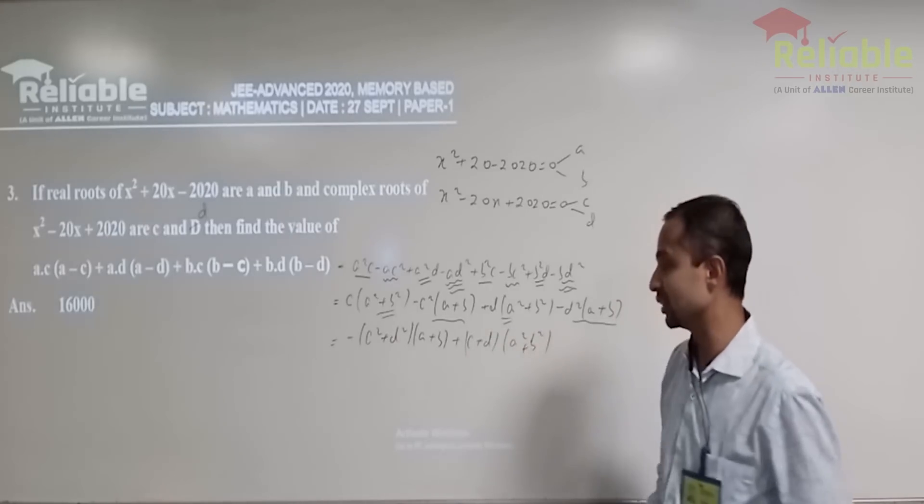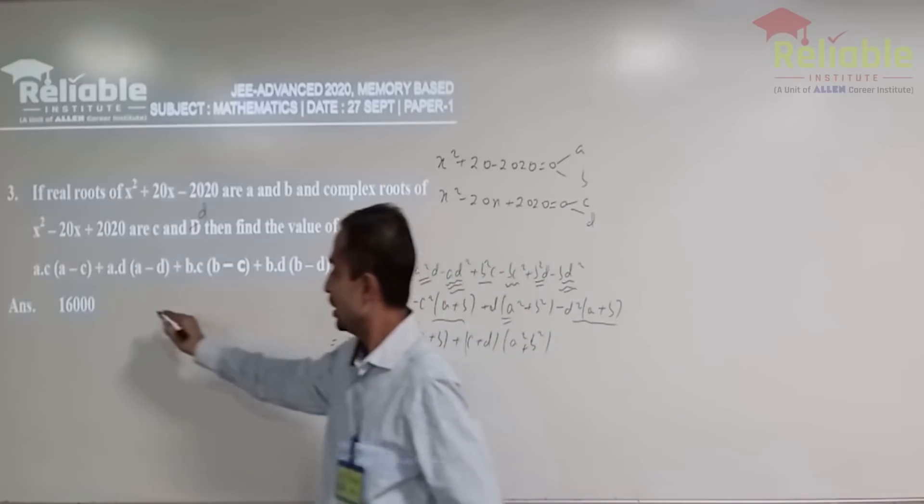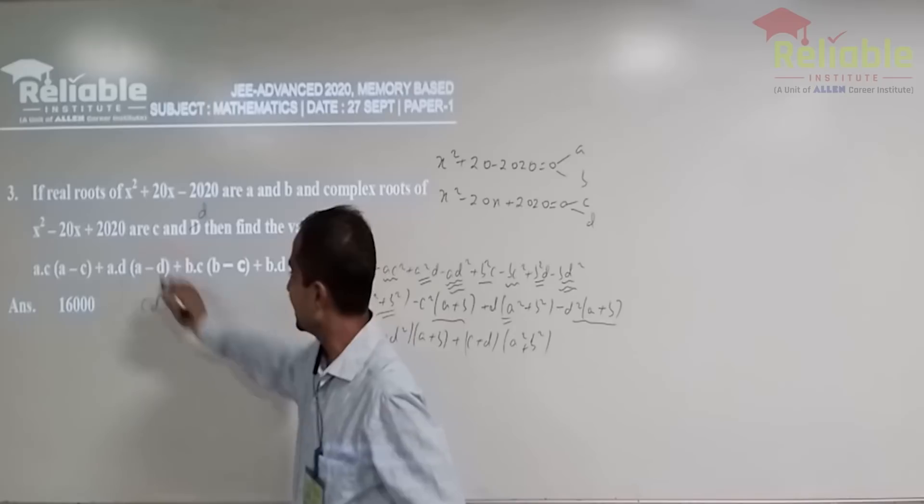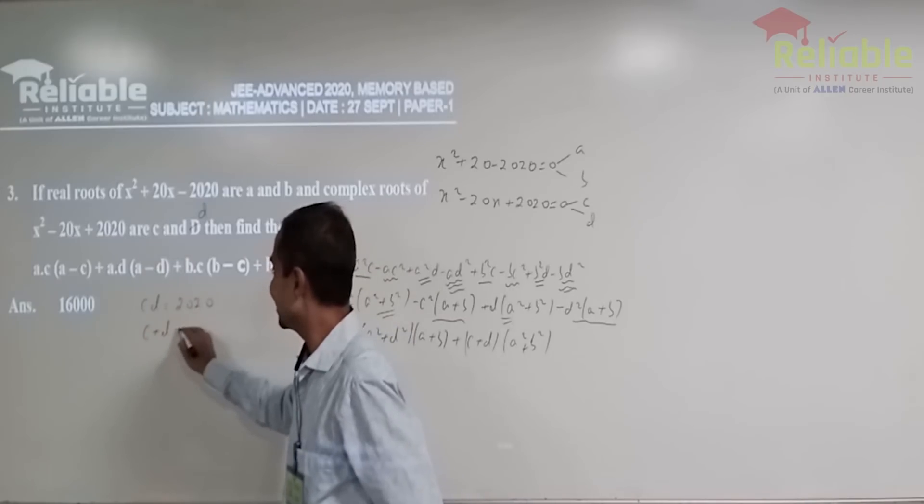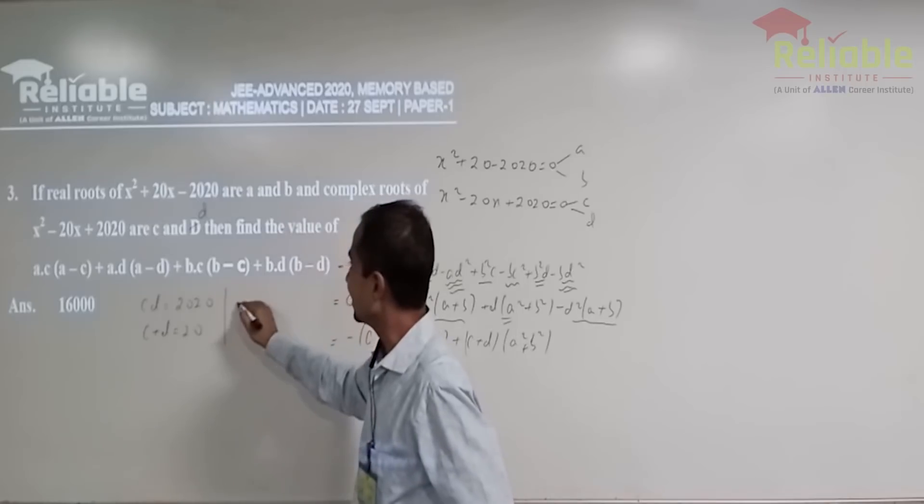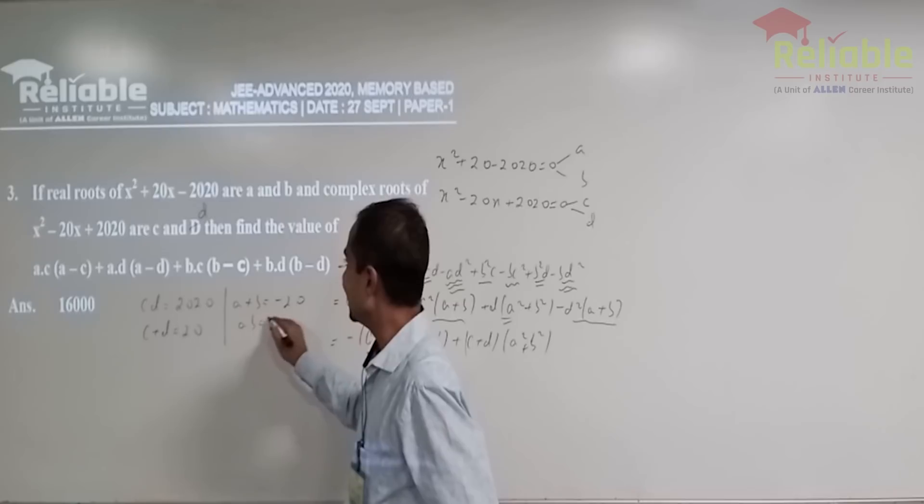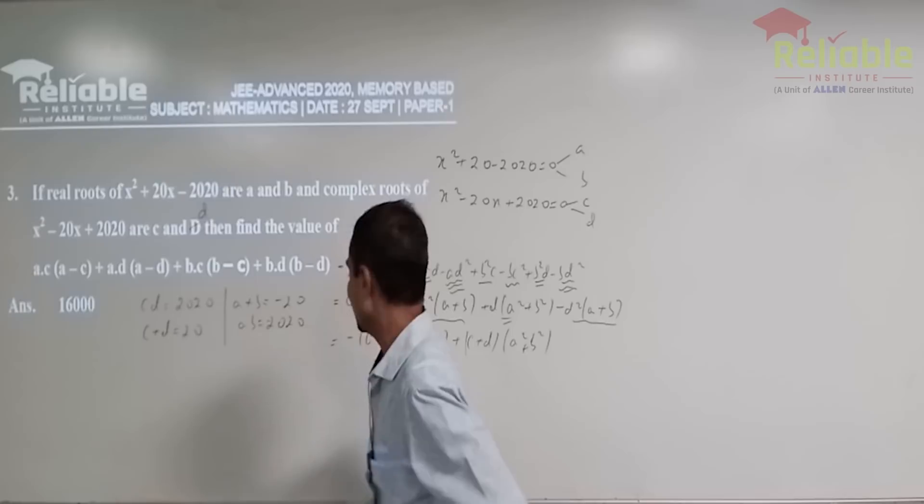Now, this is what we were looking forward. C plus D is nothing but this is 2020. C plus D is 20. Here A plus B is minus 20 and AB is 2020, minus 2020.